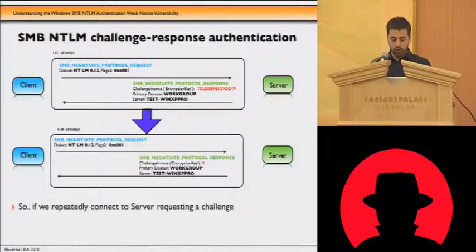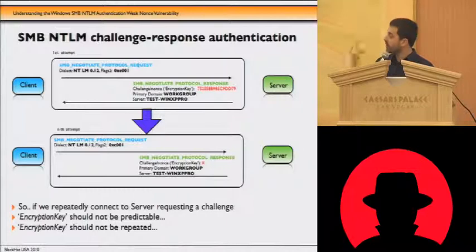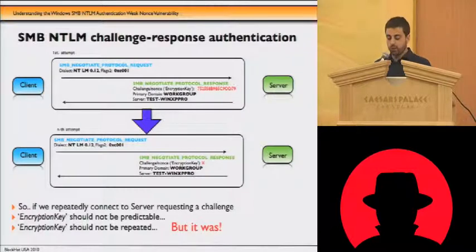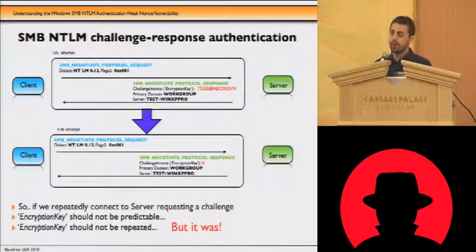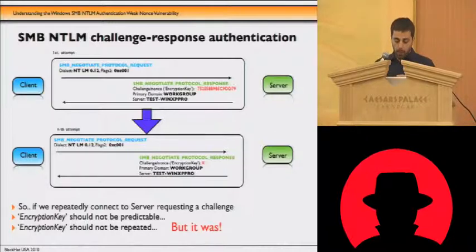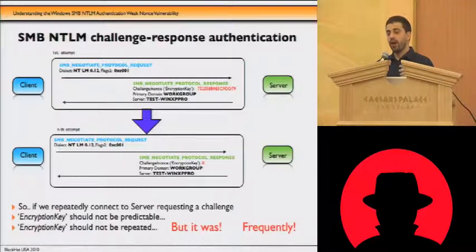So, if you connect over and over again against a Windows server, you should expect the server to return a NANCE that is non-predictable and always a different number. The first flaw we found was that the server was actually returning repeated challenges. That's a big problem because it breaks the security of the protocol. Not only that, but it was returning duplicate challenges in a very short period of time — not once a year, but potentially once every two seconds — making all the previously described attacks feasible.